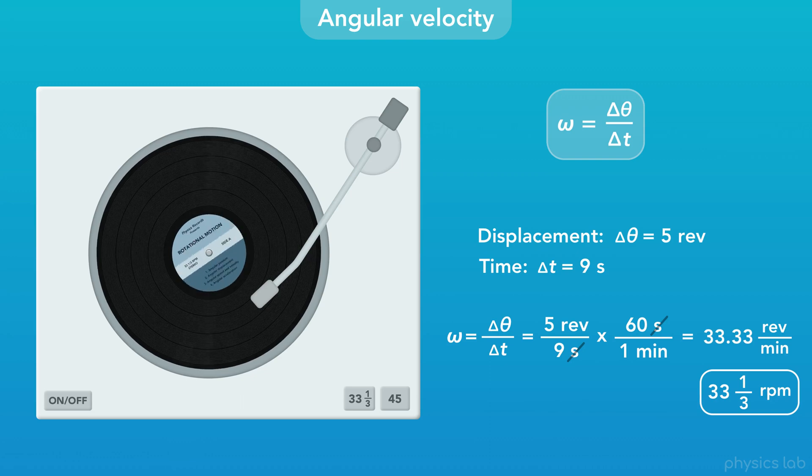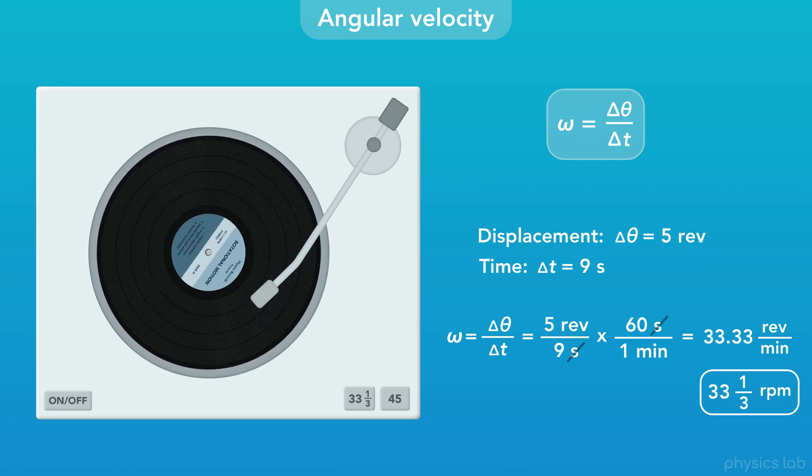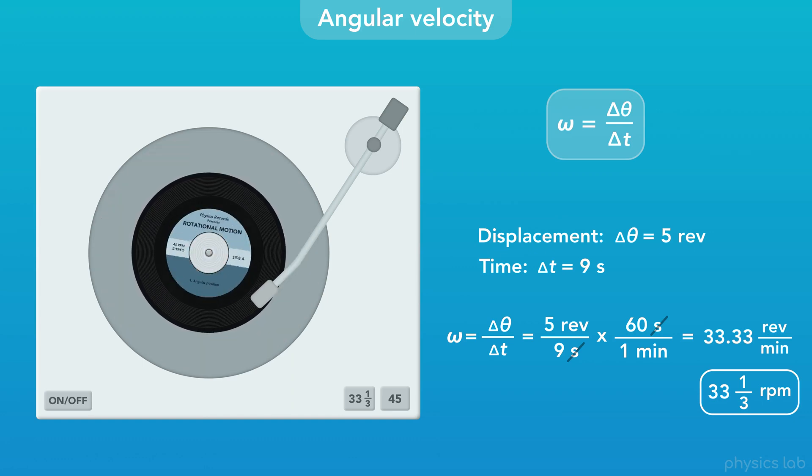The record actually tells you what speed to use on the label, and most record players have a button for 33 and a third RPM. Actually, it usually just says 33 to keep things simple, but it's really 33 and a third. Some records are meant to be played at 45 RPM, so there's a button for that too.